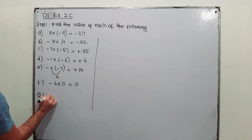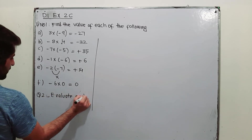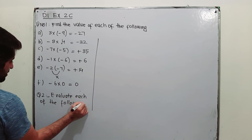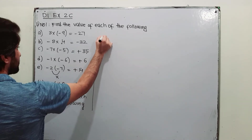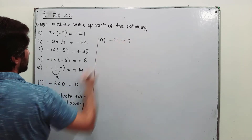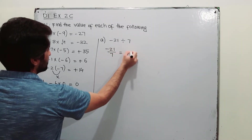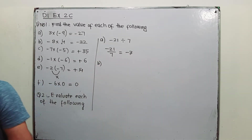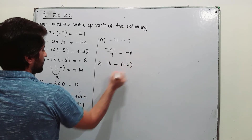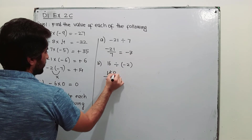Question number 2 from the same exercise: evaluate each of the following. Part a is minus 21 divided by 7 — write it in fraction form as minus 21 over 7, that is minus 3. Part b is minus 16 divided by minus 2; write it as minus 16 over minus 2.